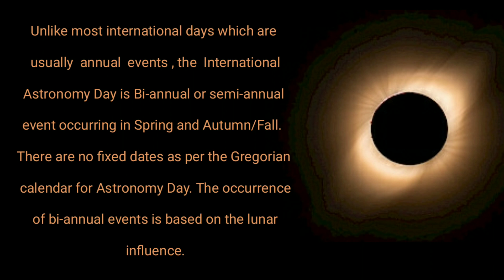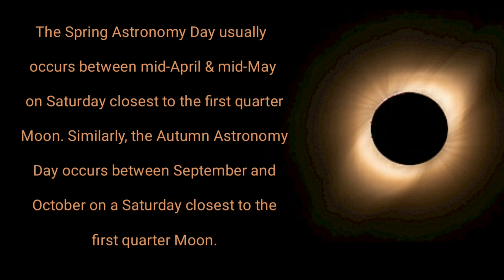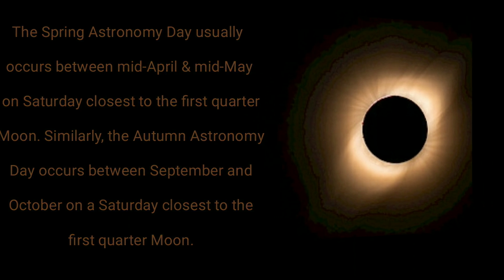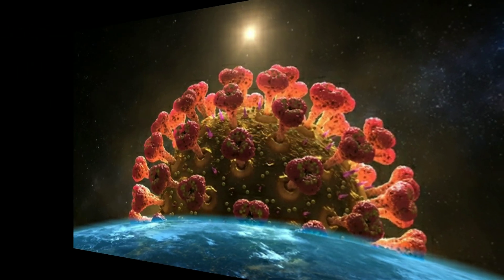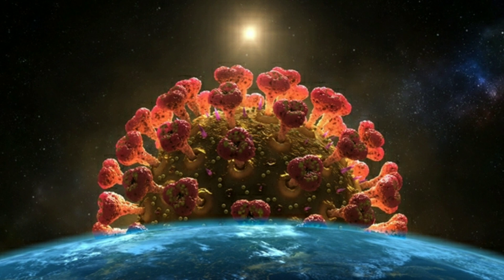There are no fixed dates on the Gregorian calendar for Astronomy Day — the occurrence of the biannual events is based on lunar influence. The spring Astronomy Day usually occurs between mid-April and mid-May on a Saturday closest to the first quarter moon. Similarly, the autumn Astronomy Day occurs between September and October on a Saturday closest to the first quarter moon.